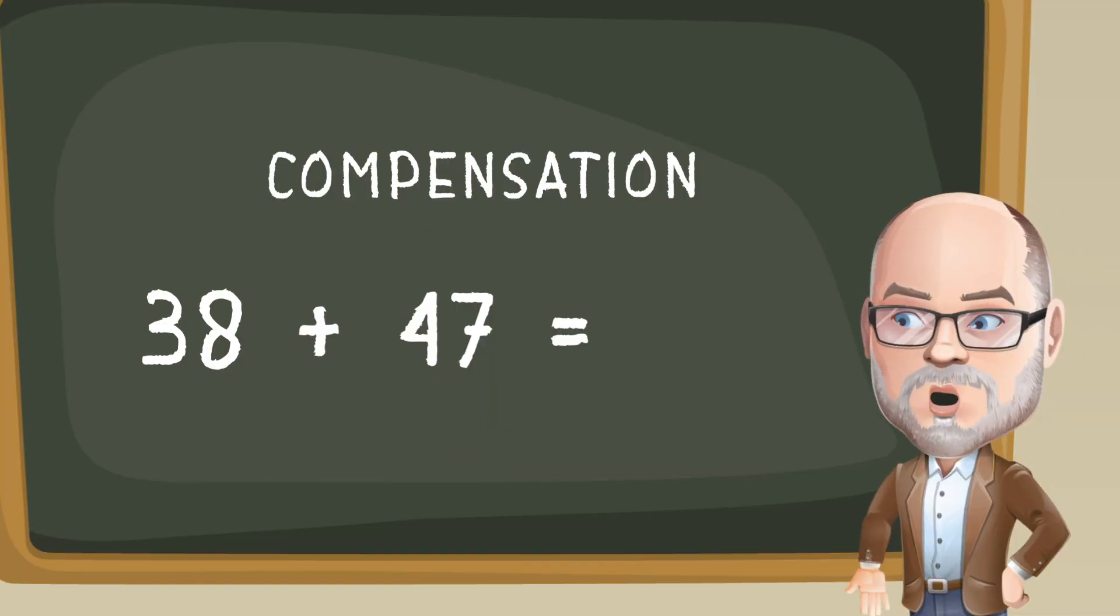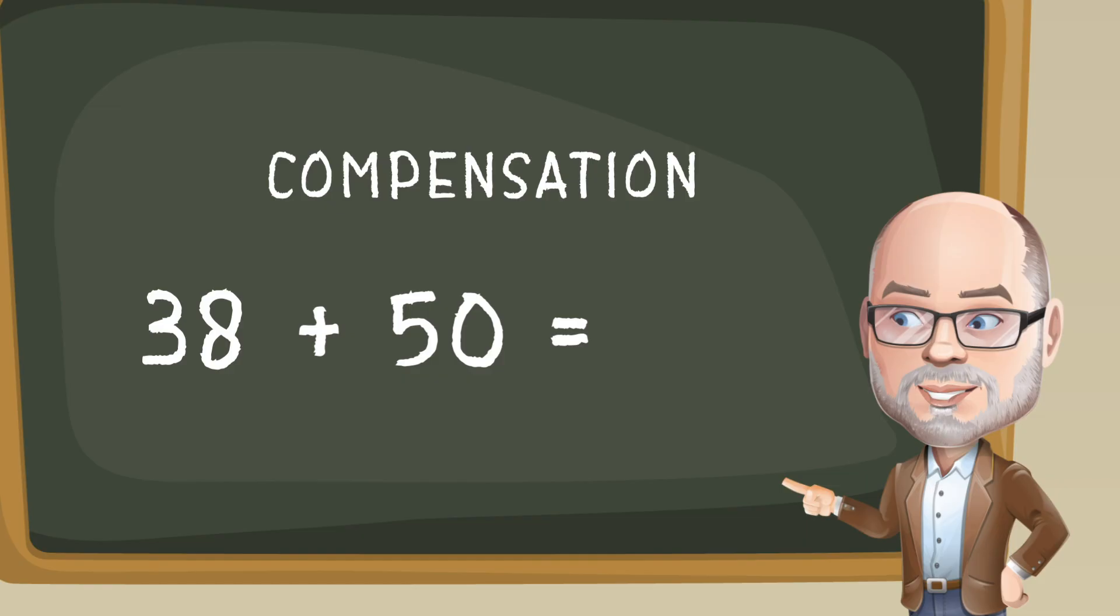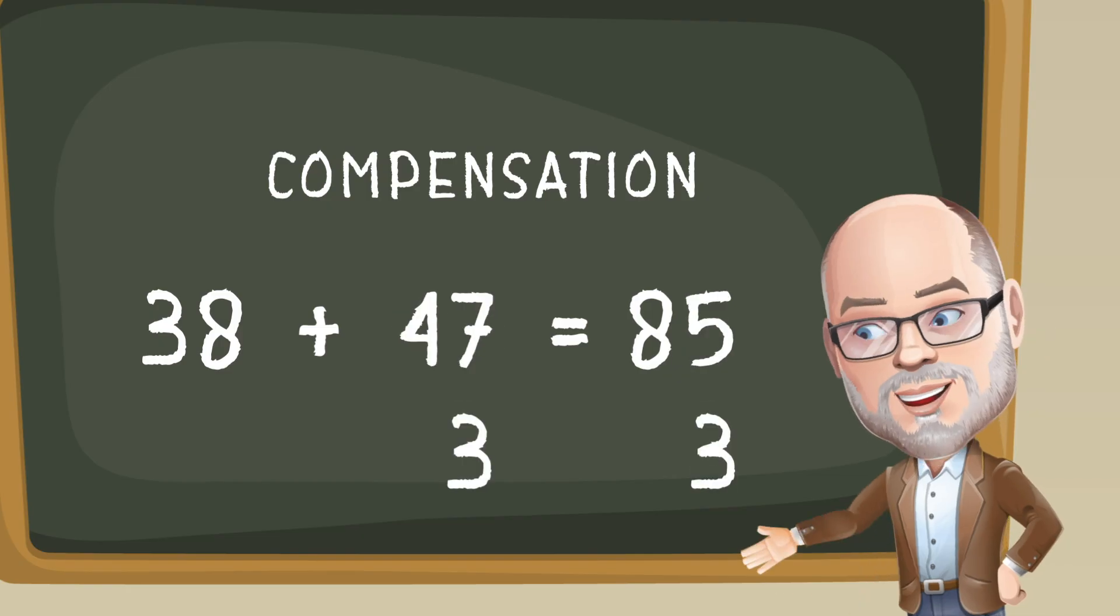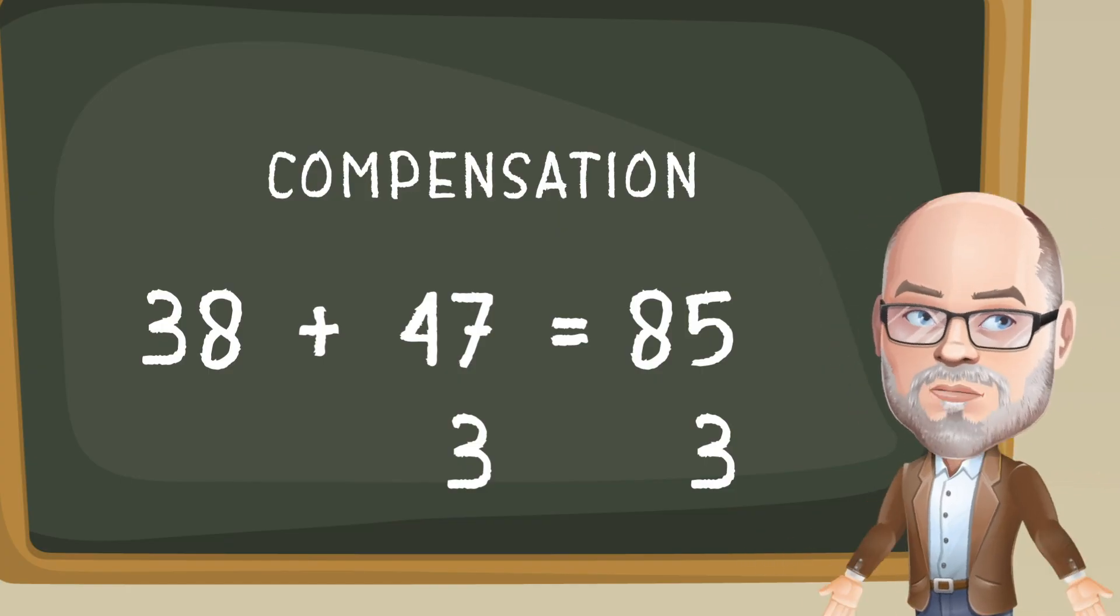Wondering if it works with the other add-in? It does. 38 plus 47 can be adjusted to 38 plus 50, which is 88, and then that's 3 too much. Take off the extra 3 from 88 and again the sum is 85.